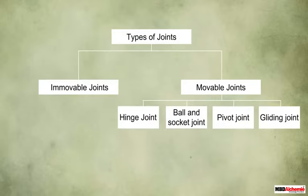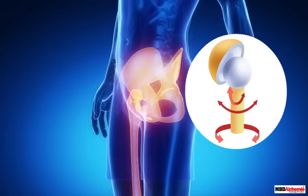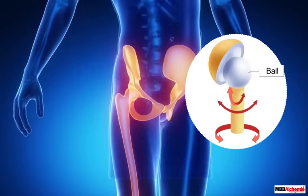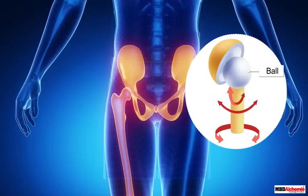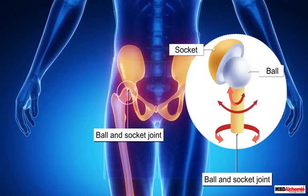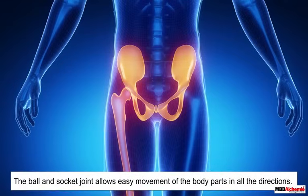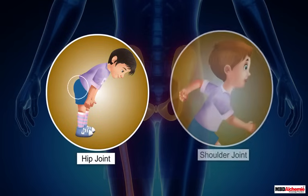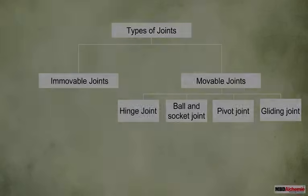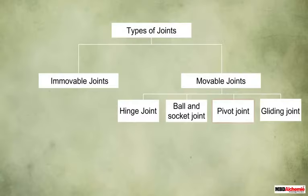In the ball and socket joint, the end of one bone acts like a ball. This bone fits into another bone which acts as a socket, hence the joint is called the ball and socket joint. This arrangement allows easy movement of the body parts in all directions. The hip joint and shoulder joint are the two examples of the ball and socket joint.